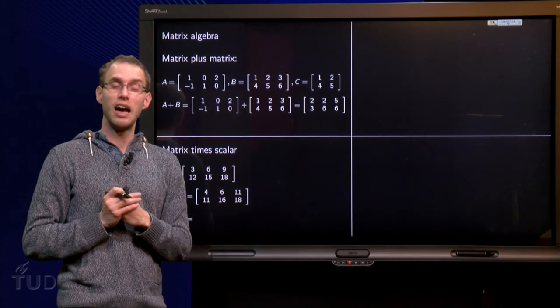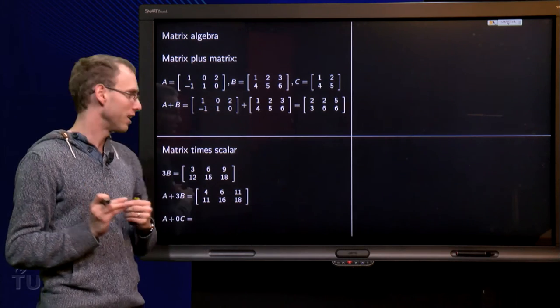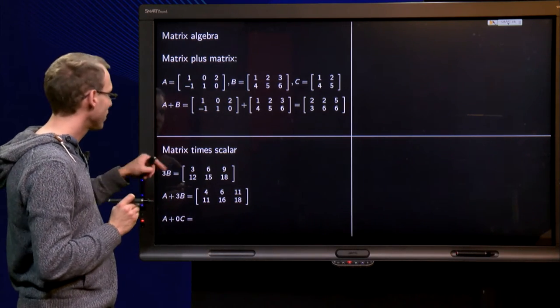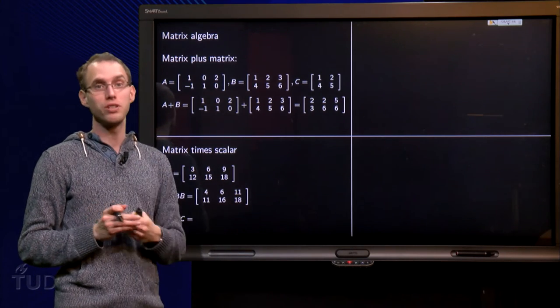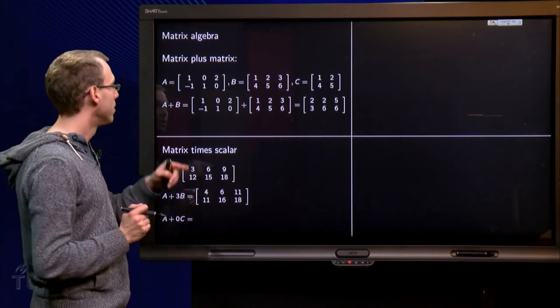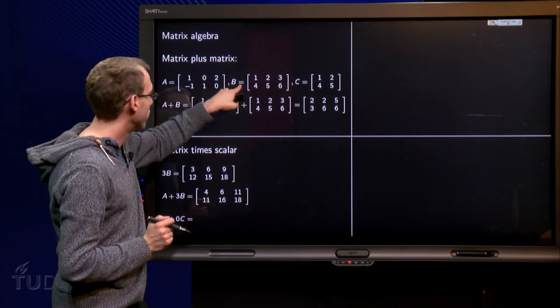Matrix times scalar. How can we compute matrix times scalar? Well, what do we do? For example, 3 times B, you compute that by multiplying all components of B by 3. So B equals 1, 2, 3, 4, 5, 6.